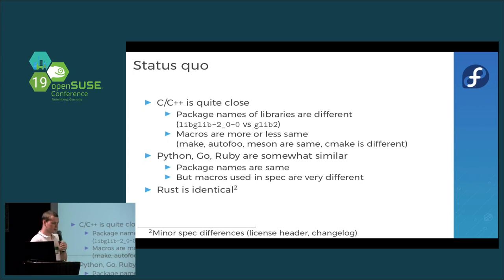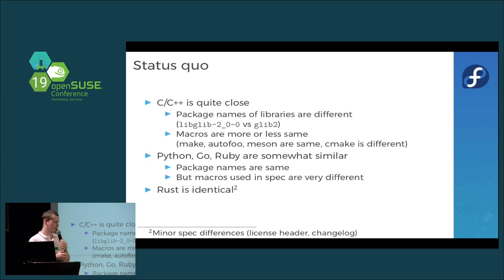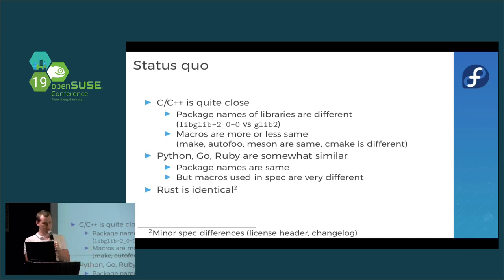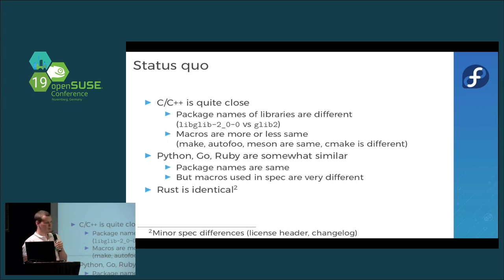The current status is that for C and C++, the packaging is more or less the same — you have the same macros like make build and make install. For CMake it's actually quite different between openSUSE and Fedora, because in openSUSE it builds out of the tree by default and for Fedora it does not. The package names are also different in many cases — in Fedora we name packages like glib2, while in openSUSE it's split into subpackages like libglib2-0.